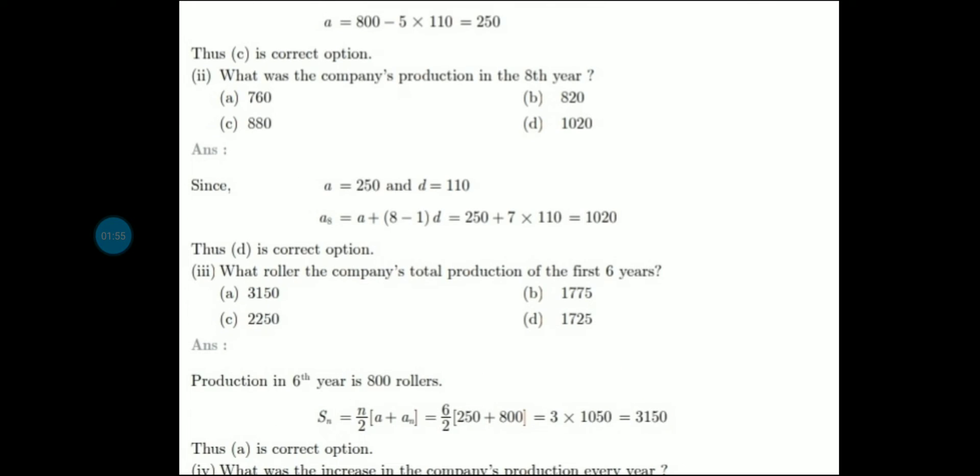Let's see what was the company's production in the 8th year. Now he has asked for the 8th year. We have A value and D value. So A8 will be A plus 7D. Here you will put values: 250 plus 7 into 110 and we will have 1020.